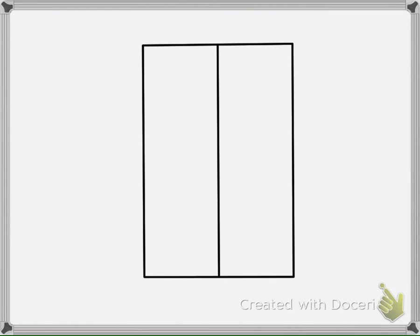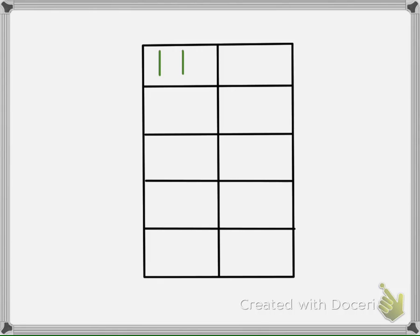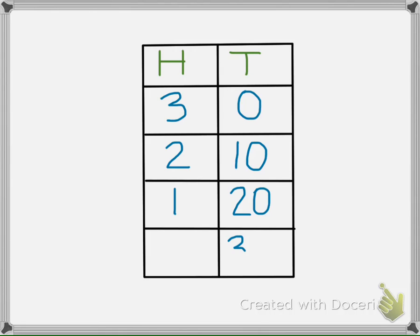Once again, we can see the pattern using a table. The same pattern of 10 applies. Each time we make 300 in a different way, the hundreds get smaller by one and the tens get larger by 10. Break one larger block into 10 smaller blocks, or combine 10 smaller blocks to make one larger block.